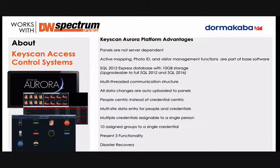We have a multi-threaded communication structure that speeds up communications. When you press save in Aurora, it sends out information to all IP addresses simultaneously. We are people-centric instead of credential-centric, so one person can have multiple credentials. You can have 10 groups assigned to a single credential, which helps with mapping out your group access levels.